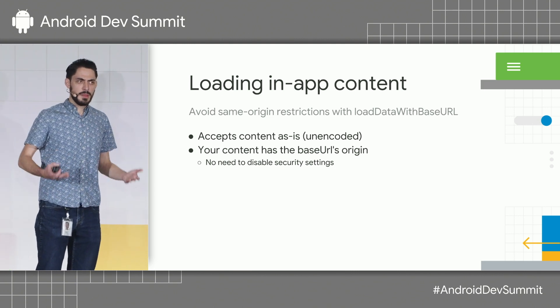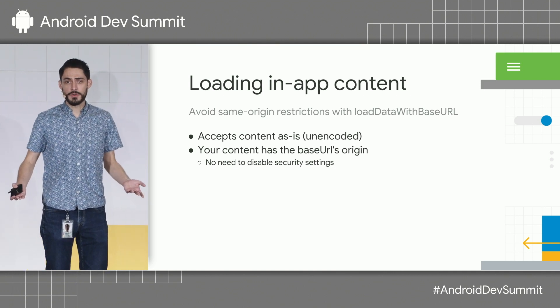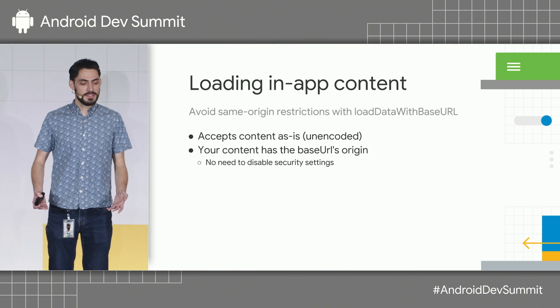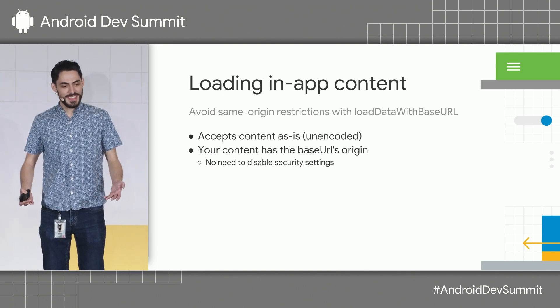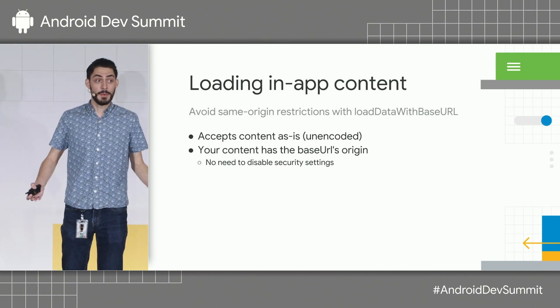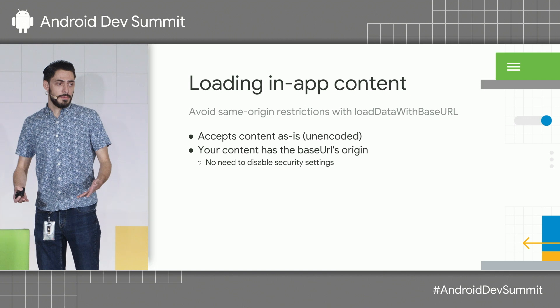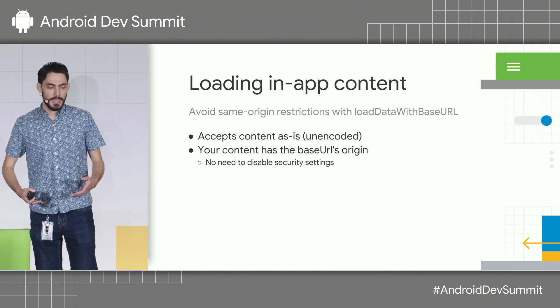We can also address the same-origin restrictions by using something called loadDataWithBaseURL. One nice thing about it is that it accepts content as-is — you don't even have to worry about Base64 encoding. It also has a base URL parameter: although you're displaying HTML content passed in as a string, the base URL configures the origin it operates with. So you can control which origin you get without disabling important security settings just to make APIs work.